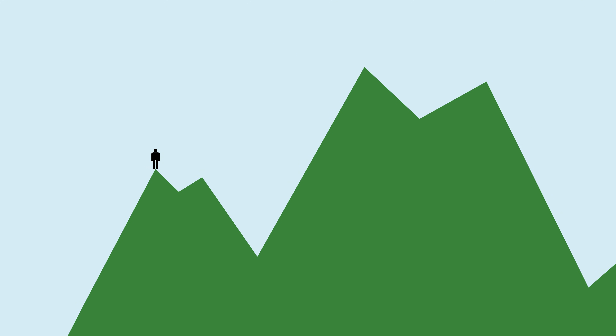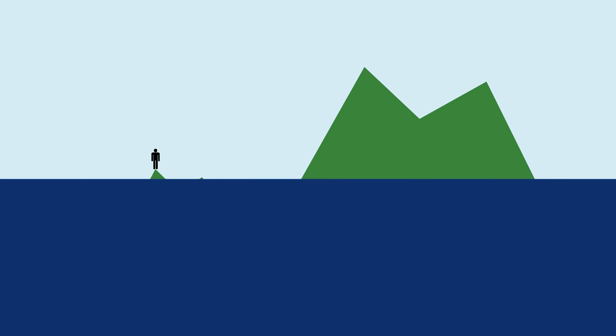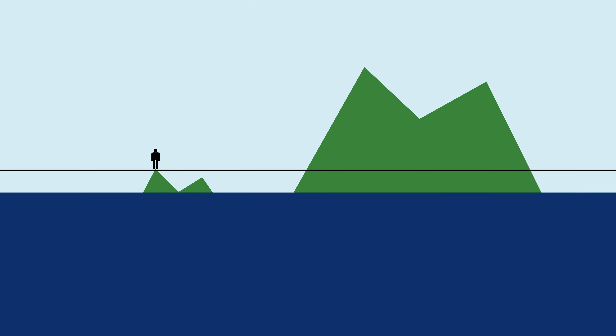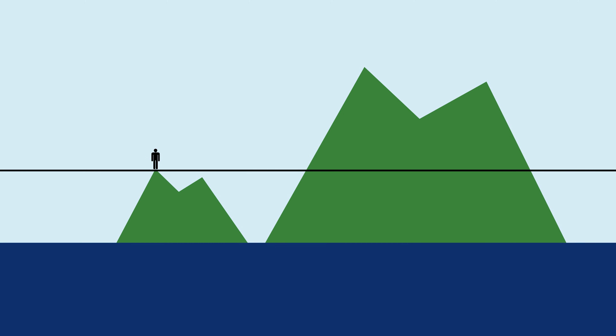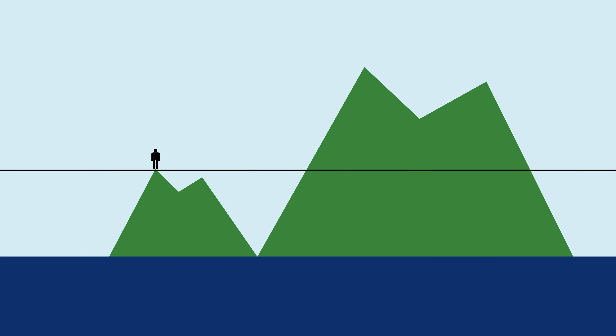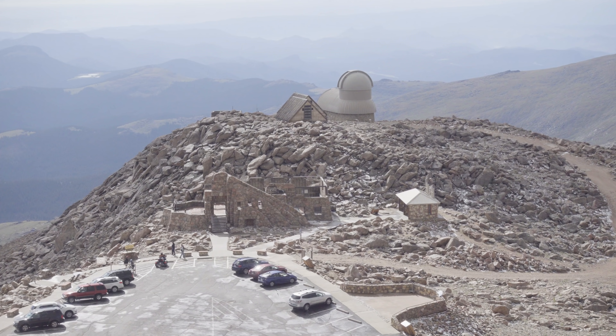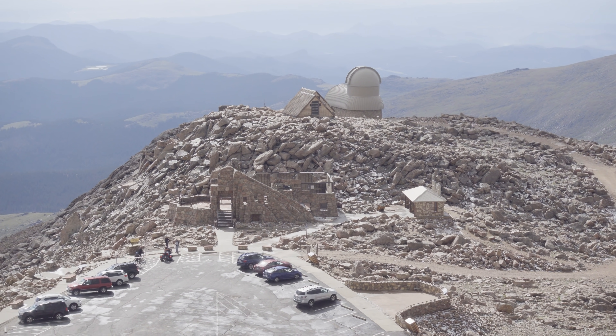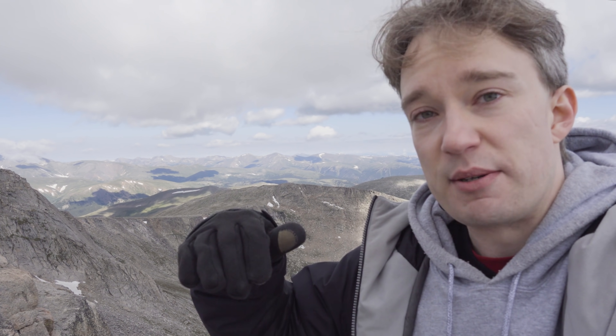Prominence works like this. Imagine if you could raise sea level up to where I'm sitting now. How many metres would it have to drop before you could connect this mountain to another, taller one, and walk there without getting your feet wet? From Mount Evans, that is 839 metres down, or about one-fifth of its height above sea level. That observatory summit over there? It's not prominent. Sure, you have to walk downhill from it, but after a few metres, you're going uphill again.